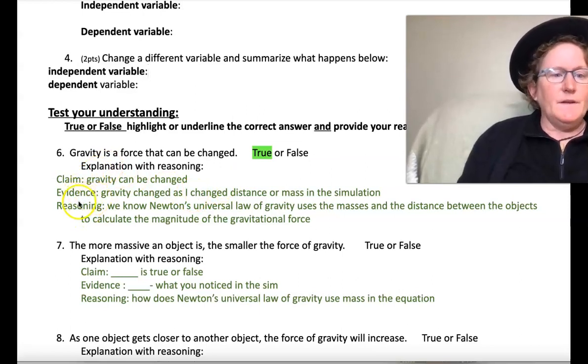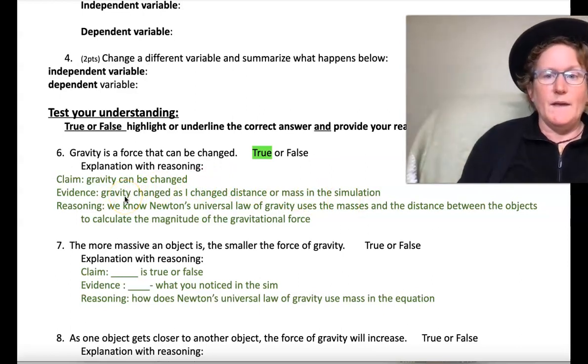So I'd like you to write a CER, a claim, evidence, and reasoning. Our claim here is gravity can be changed. Evidence: gravity is changed as I change the distance or mass in the simulation. So evidence is what I say to support my claim.